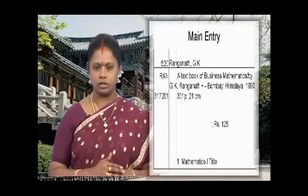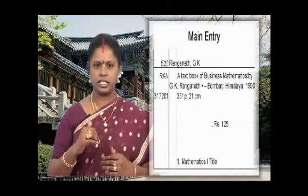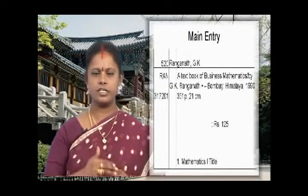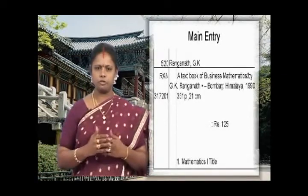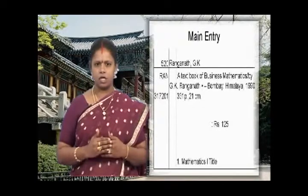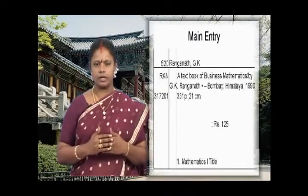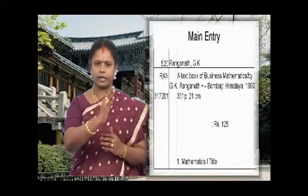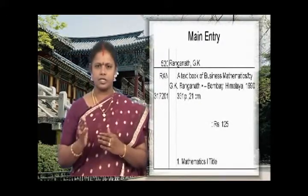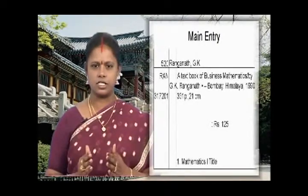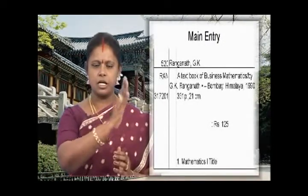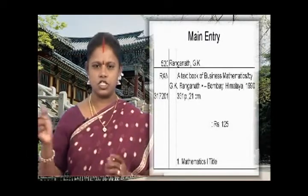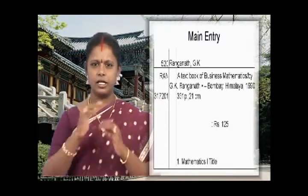Now let us start with the heading section on the horizontal line, writing the choice of access. This title page is for a single author. The author's name is G.K. Ranganath. The rule says we copy down only the surname first. The surname is Ranganath, so starting from the first vertical, write: Ranganath, comma, GK. Now we have completed the heading section.